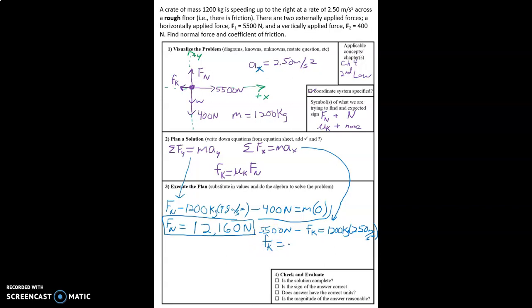And so we can find f_k. Do the algebra here: 5,500 minus 1200 times 2.5. You get 2500 newtons for the force of friction. If you would like to show more algebraic steps than I just did right here, I welcome you to do so. It's a good idea to show more steps rather than less. I have quite a bit of experience doing algebra, so doing these three steps in my head did not bother me.